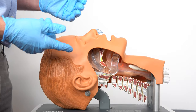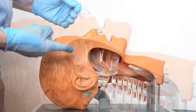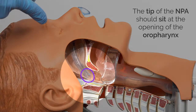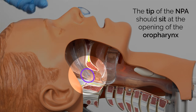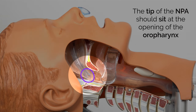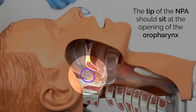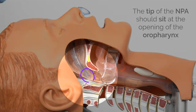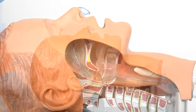You can see in the side cut where the tip of the tube is. If the tube was too long, potentially the patient may start gagging or coughing, in which case you'd remove the tube and replace it with a smaller size.